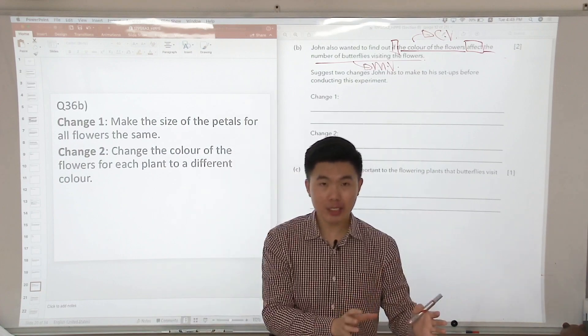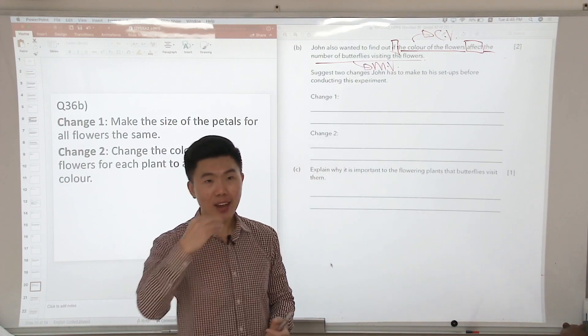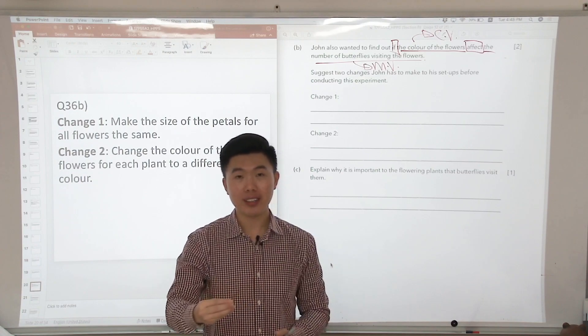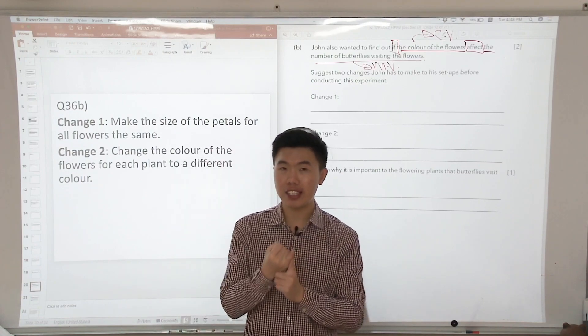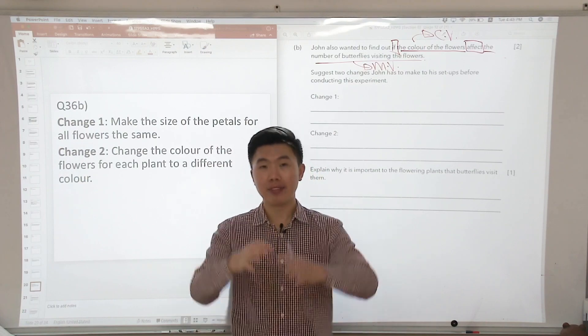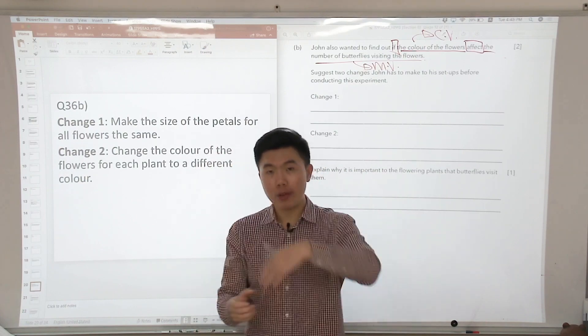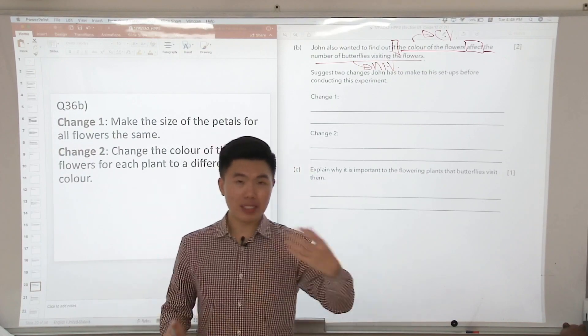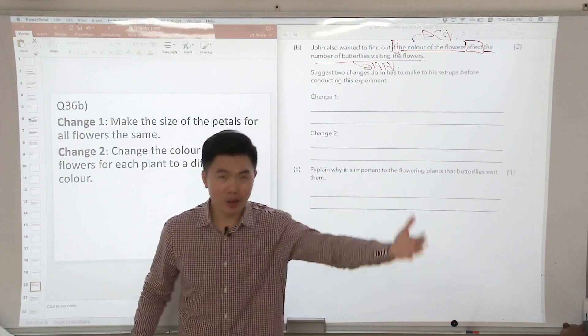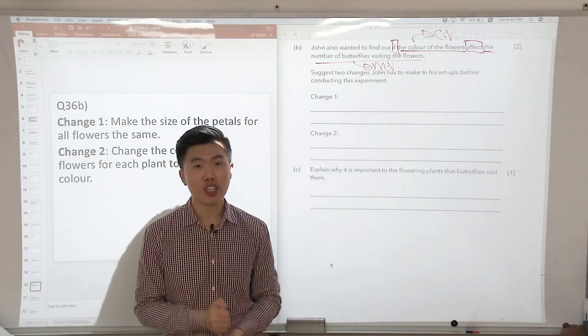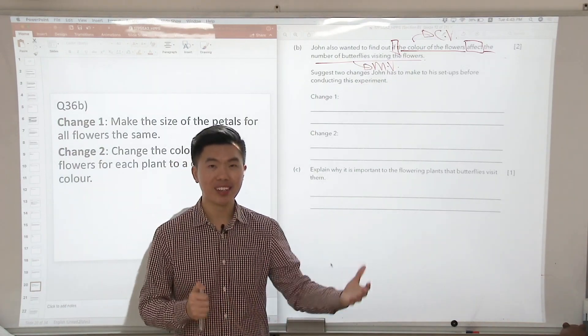So once pollination occurs, what's the next step? Fertilization will take place and the flower will develop into fruit. With the fruit then there will be seeds, and with seeds then the seed will be able to germinate and form a new plant. And this is how the plant ensures the continuity of its own kind.